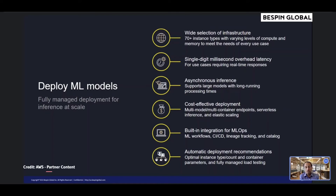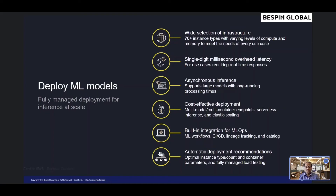SageMaker's serverless inference automatically provisions and scales, turning off compute capacity based on the number of inference requests. With SageMaker's serverless inference, the service automatically removes the need to manage complex scaling workloads by ensuring the exact amount of resources are available for inference. For all other use cases, you can use autoscaling in SageMaker with policies to elastically scale the underlying compute resources to accommodate fluctuations in inference requests.